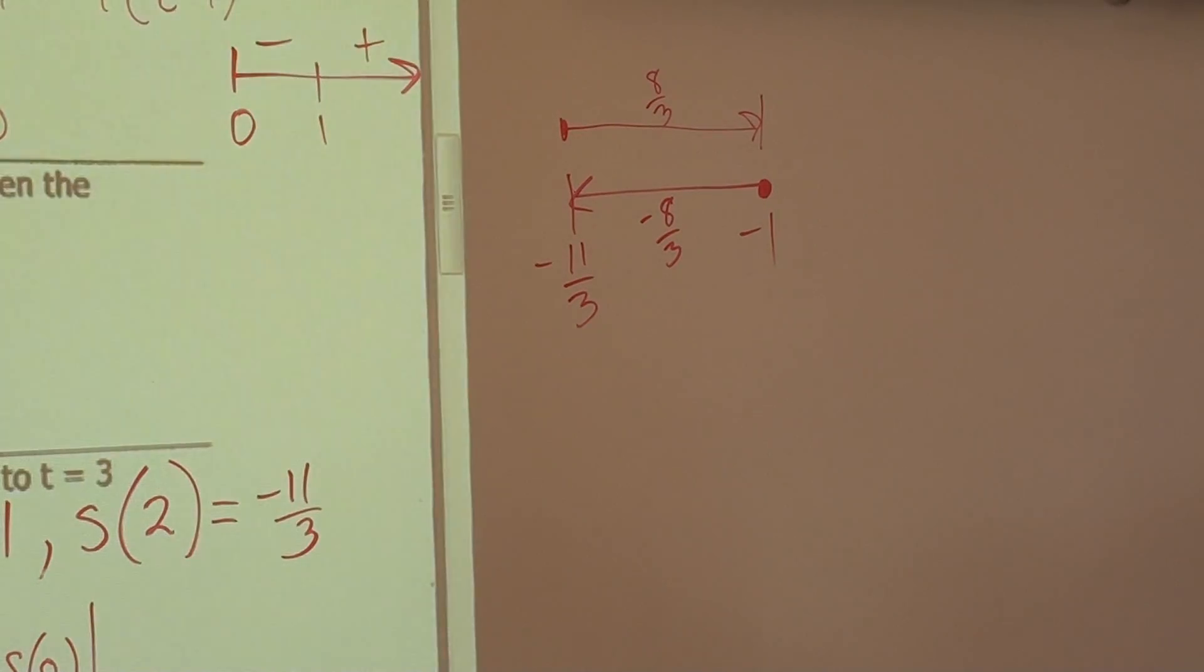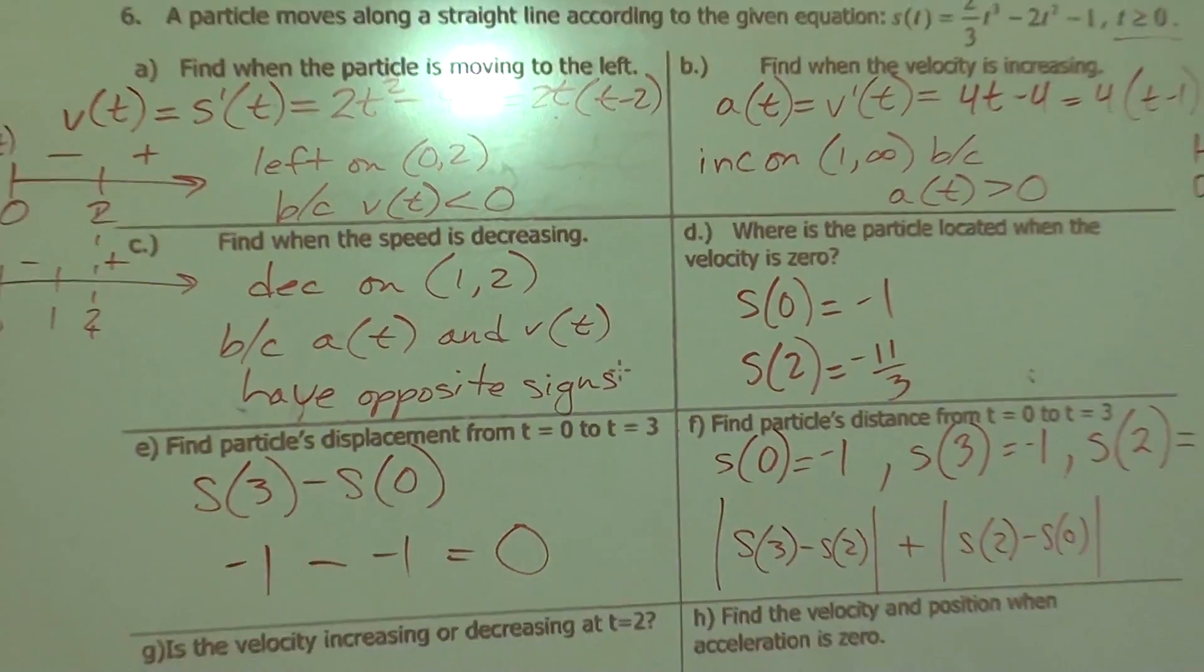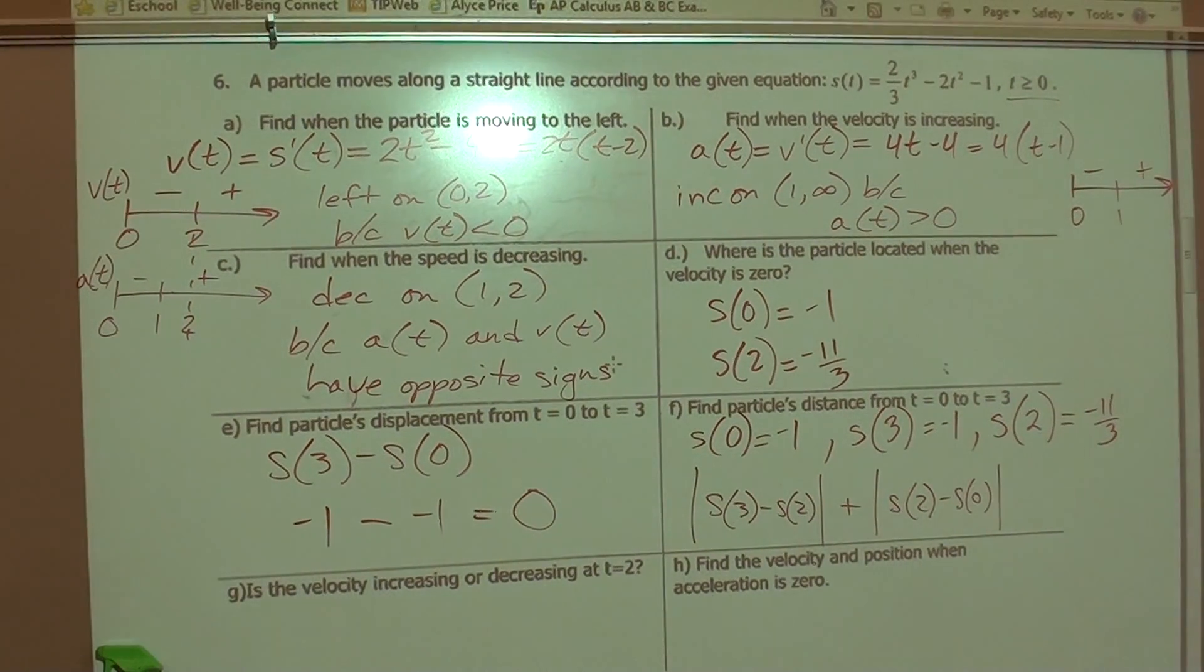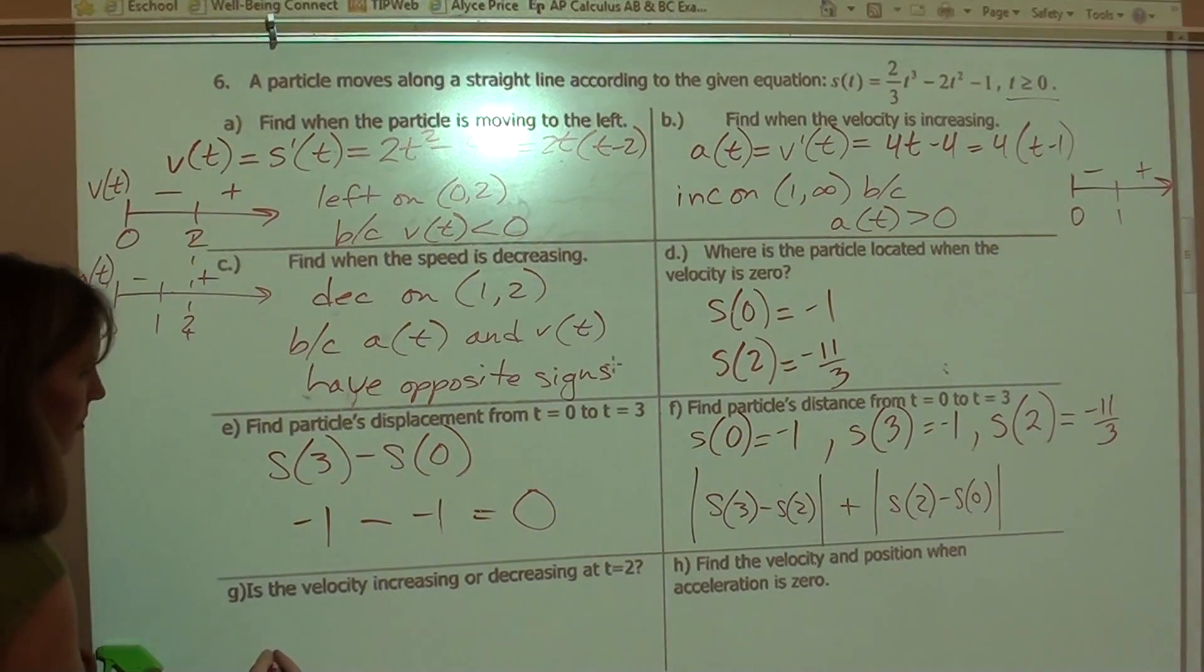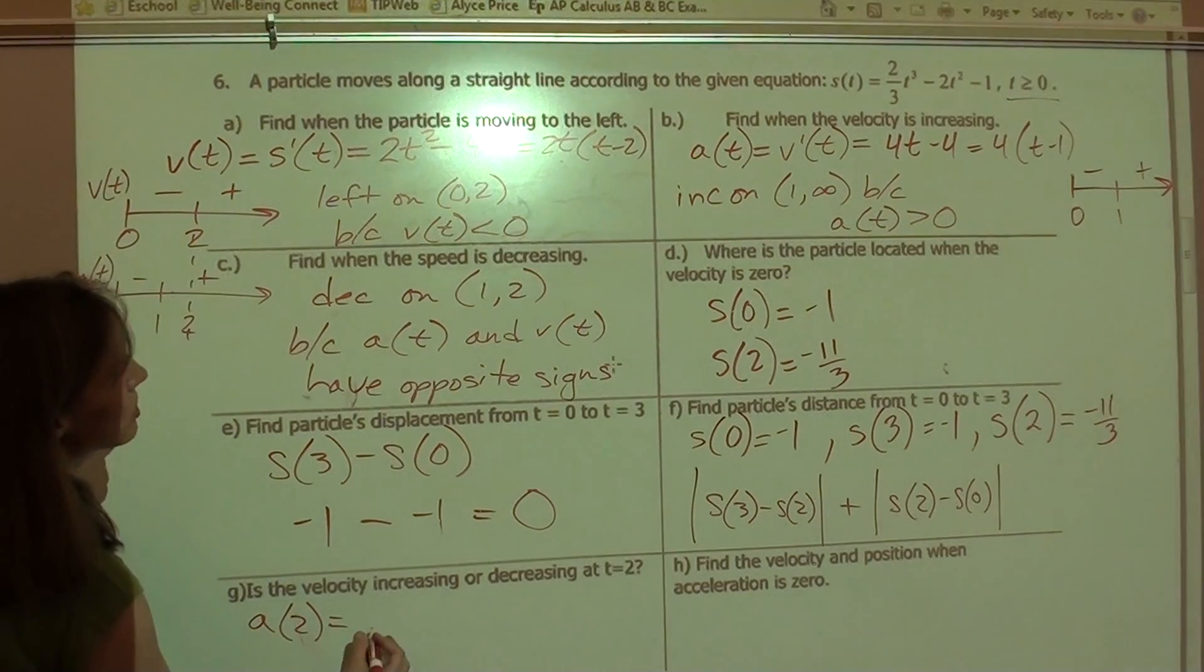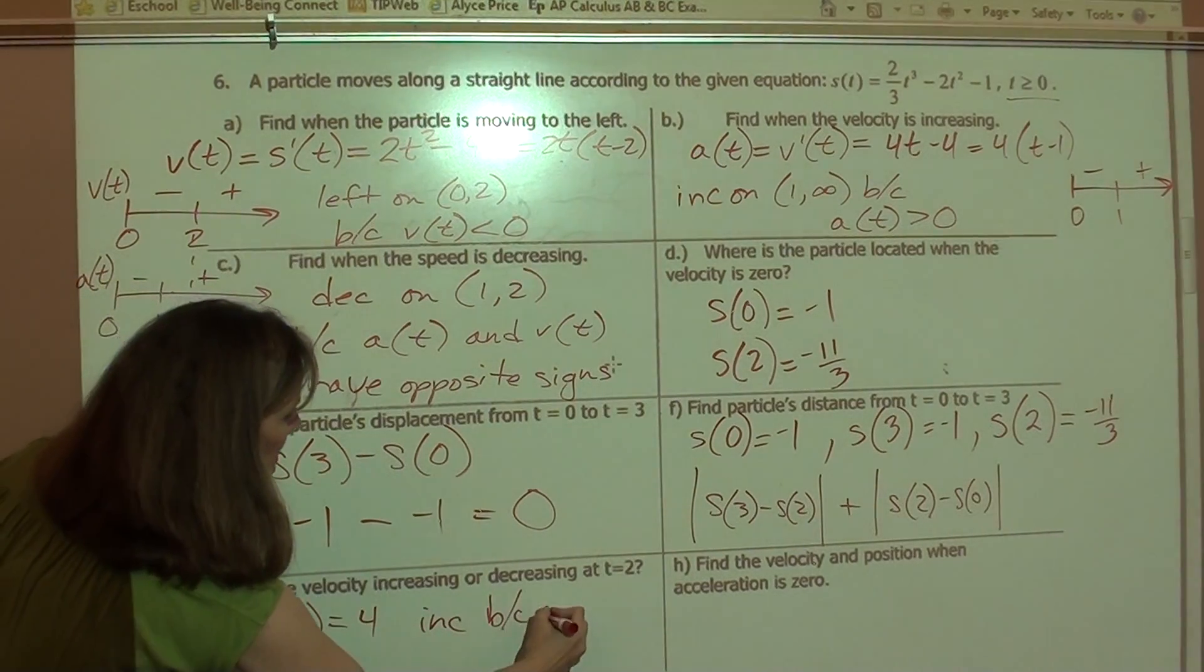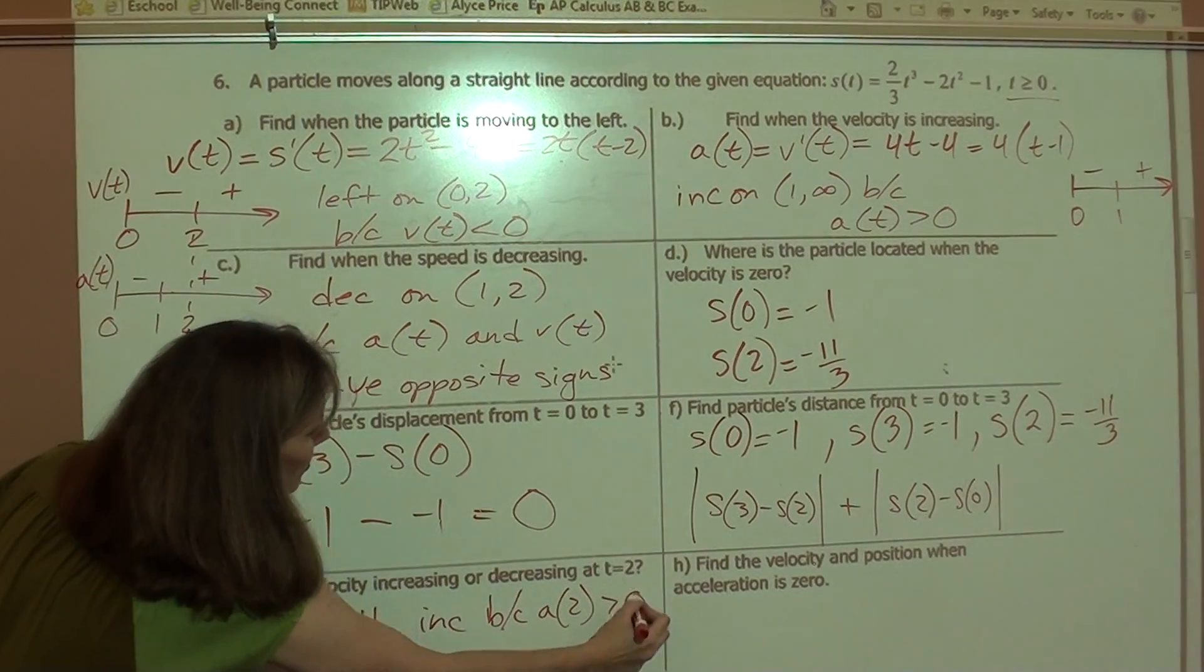We're going to zip through just the last couple of questions. So is velocity increasing or decreasing at t equals 2? Well, you'd have to find A(2). A(2) is 4. So velocity is increasing because A(2) is positive, right?